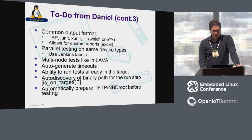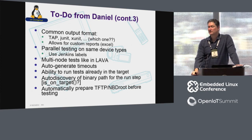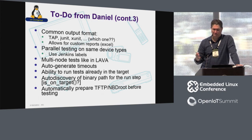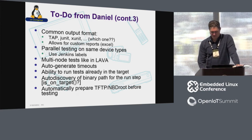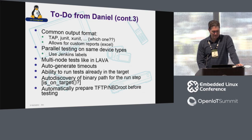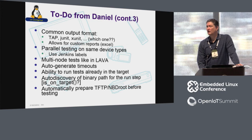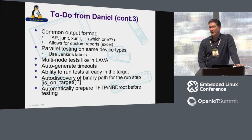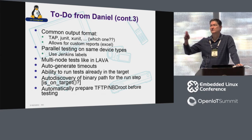Ability to run tests already on the target — we're almost there. There's something that will probe the target, look on it, and find the path. The next step was to add caching support, because sometimes the operation to find it takes a while if it's not in one of the normal places. On automatically preparing TFTP/NBD routes before testing: in case you have to use the system, you can create a job for your file system and your kernel, and once it's prepared, trigger the other jobs. The Mitsubishi guys had a presentation at ELC Europe where they were talking about doing exactly this for their kernel testing.